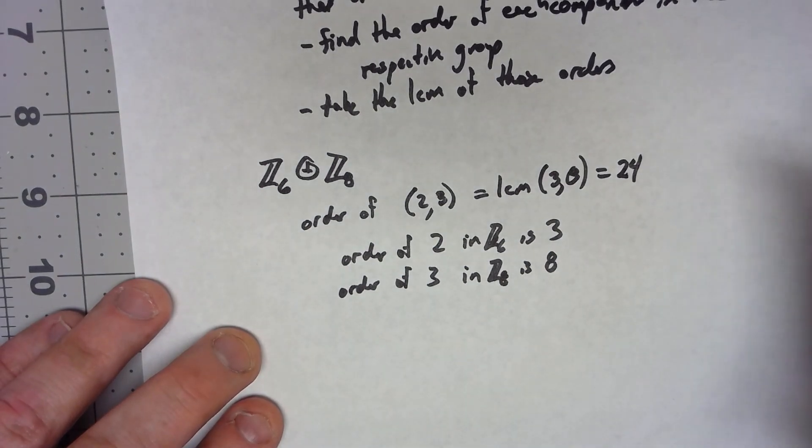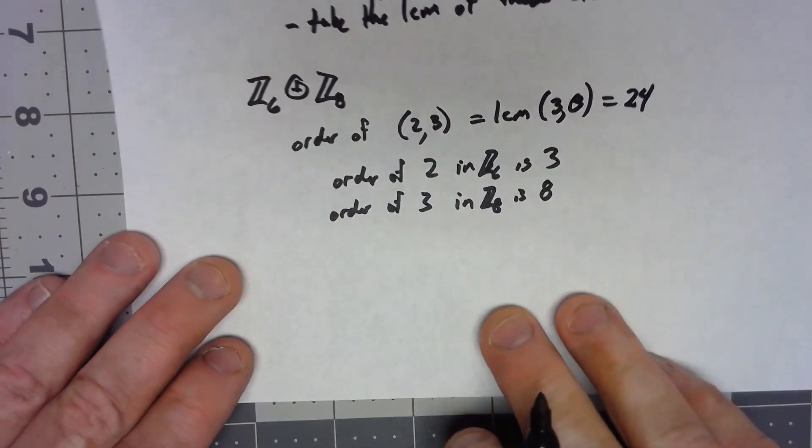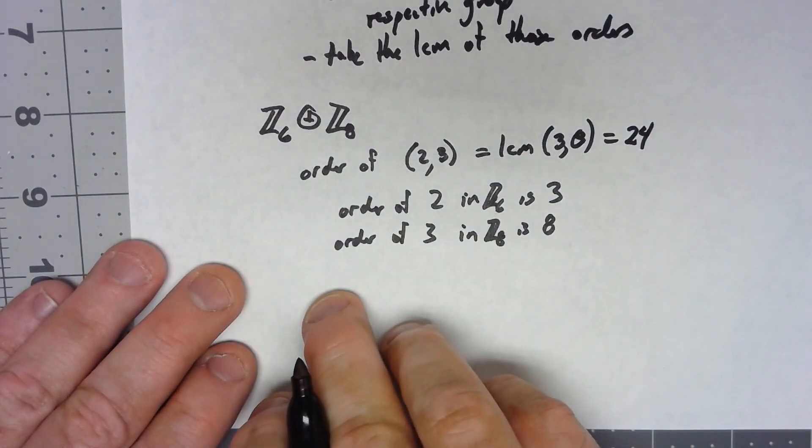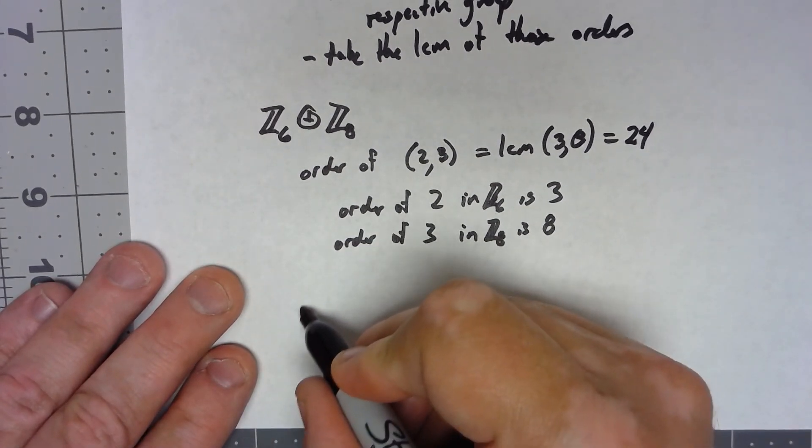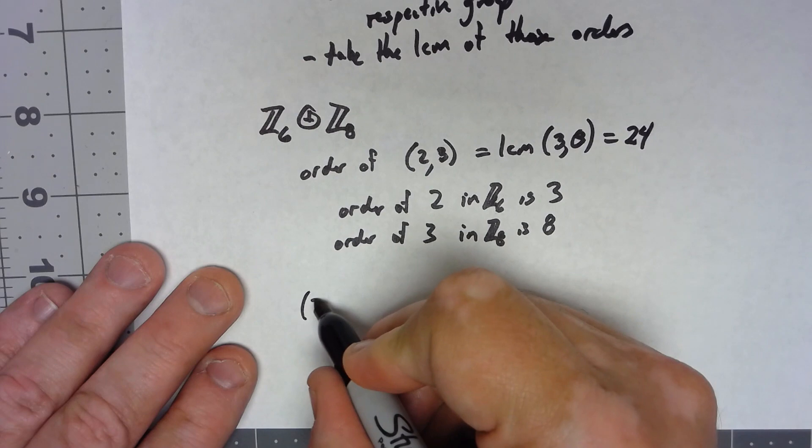Let's take another element in Z6 plus Z8. If we want to find, say, the order of (3,6).